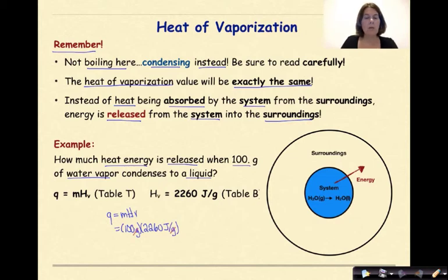We know that we're on the right track. If grams will cancel grams, we're left with joules, which is what we want. And when we multiply these two values together, we get 226,000 joules of energy, which like I've said before, you can put into scientific notation, or you can leave it in standard notation.